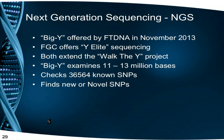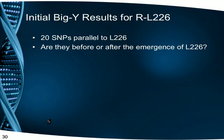Full Genomes Corporation offered a similar test called Y Elite. Both offered extended SNP testing of the Y chromosome, with Y Elite covering even longer sections than Big Y. While testing some 11 to 13 million bases, over 36,000 known SNPs were checked, but more importantly, novel or new SNPs were also discovered for each participant. Initial results for our cluster showed some 20 reliable SNPs parallel to L226 in each participant.